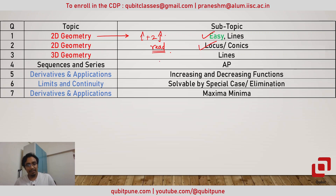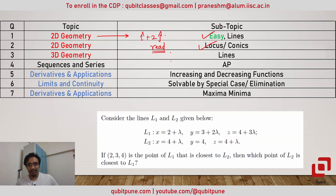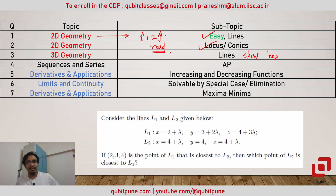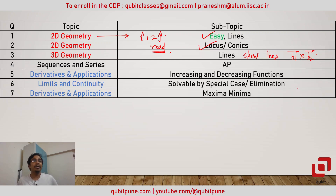Question number three was on 3D geometry, based on the idea of skew lines. In our syllabus, 3D geometry is discussed using vectors, so we had to know the cross product and a few things about lines and points on them.